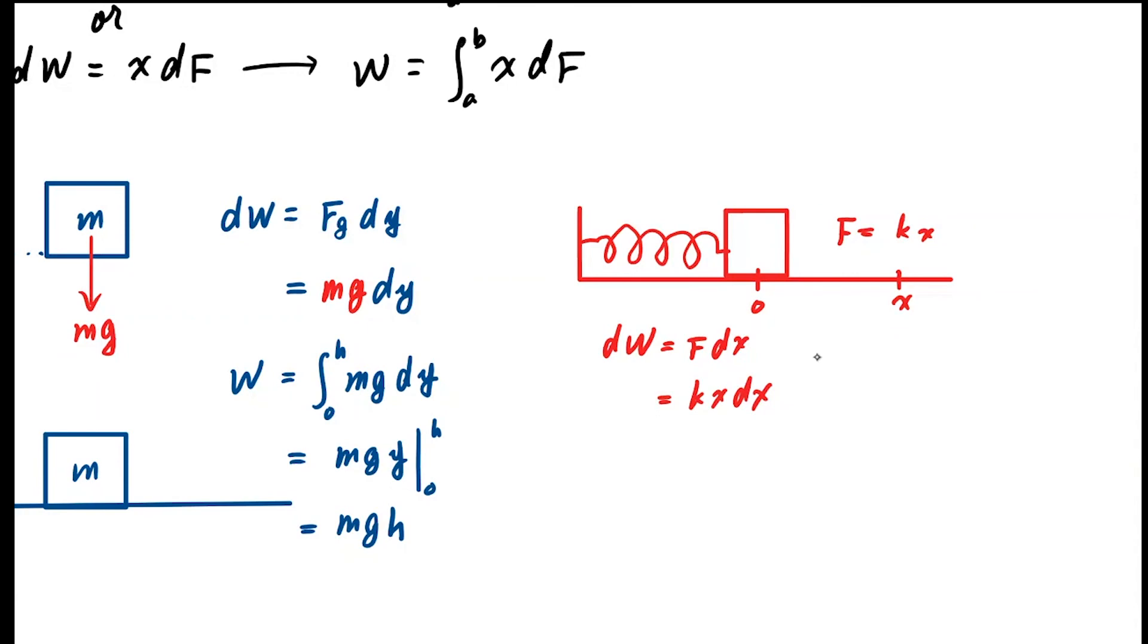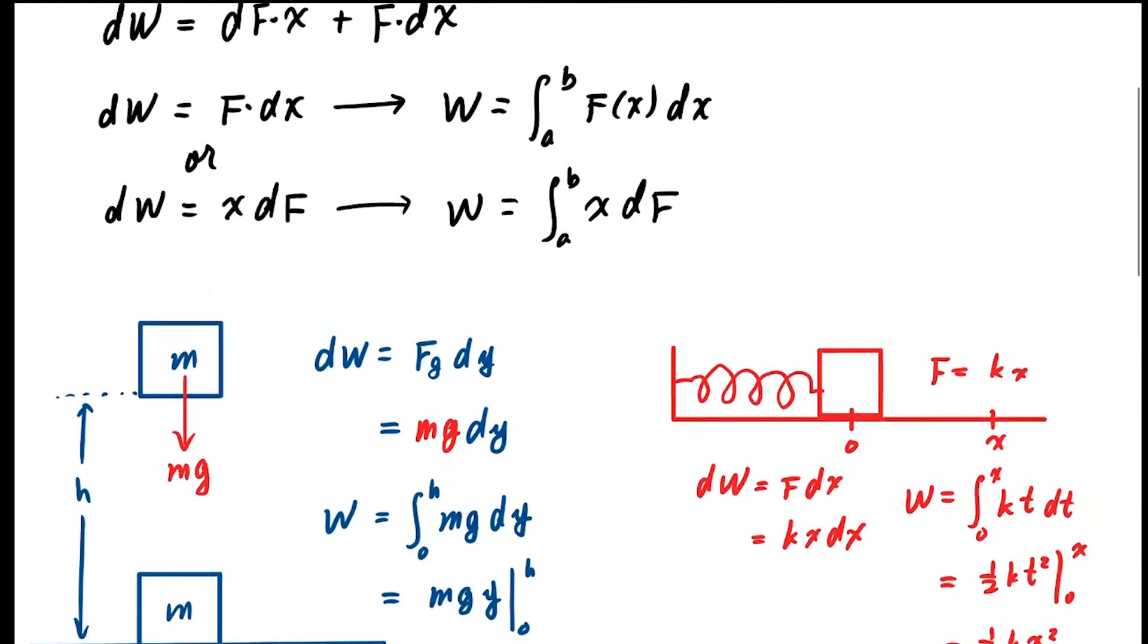Your work is equal to integral from zero to x. If I use x here, I cannot put x here, so let's put dummy variable t. That becomes ½kt² evaluated from zero to x. So that's the potential energy ½kx², which is what your physics teacher taught you about the potential energy of the spring. Both of these are using this application, dW = F·dx. Let's take a look at the other application, x times dF.